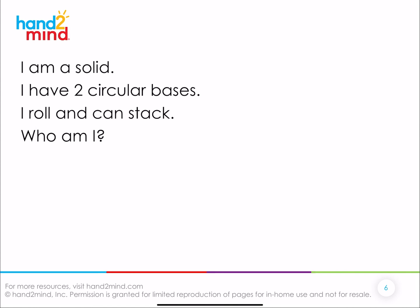Here's the next one: I am a solid. I have two circular bases. I roll and can stack. Who am I? Did you say a cylinder? Yes, a cylinder is a solid shape. It has those two circular bases — one on top and one on the bottom. If I lay it on its side, I can roll it. If I keep it upright, I can stack it. Good job.